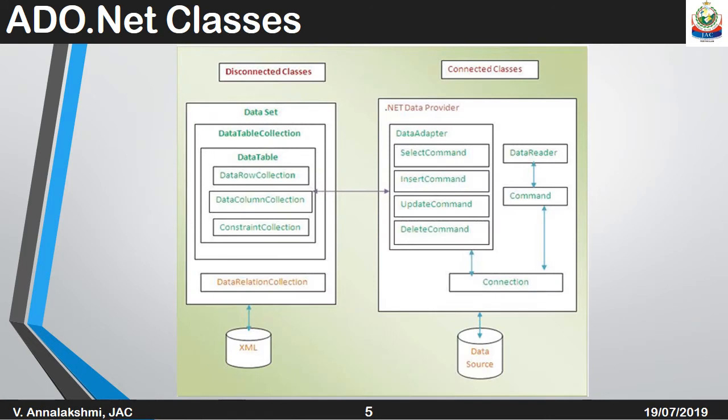ADO.NET classes can be categorized into two types: disconnected classes and connected classes. In disconnected classes, it contains a data set, data table collection, data table — which has data row collection, data column collection, and constraint collection.